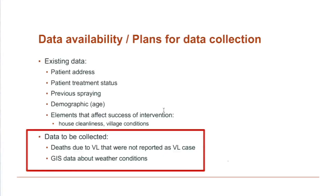We have data available to inform this decision-making problem — patient-level data for both Bihar and UP, including historical cases, so we can figure out when and where a particular individual was affected by VL, and whether they were cured. We also have information about areas that were sprayed in the past, patient-level demographic information, and elements that impact the efficacy of the spraying, such as cleanliness of households and the status of the village. If a house is not clean, the efficacy of the spraying will drop.